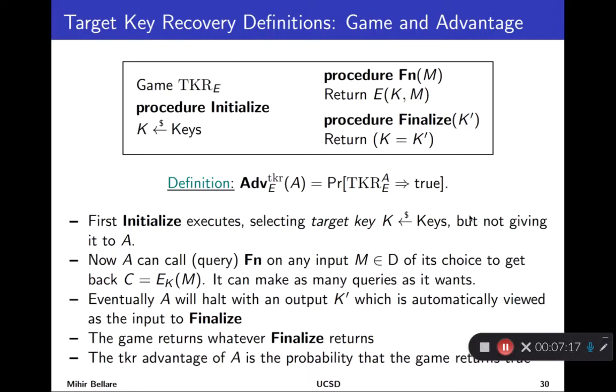So the game TKR is subscripted with E. Remember, E is a family of functions because it pertains to or tries to measure the security of E. It begins with the procedure initialize, which picks a key at random from the key space. This is the key space prescribed by the family of functions E. The game internally stores that key. This procedure is run once, and then the key is fixed, but the key is not exported. Your adversary doesn't know what it is.